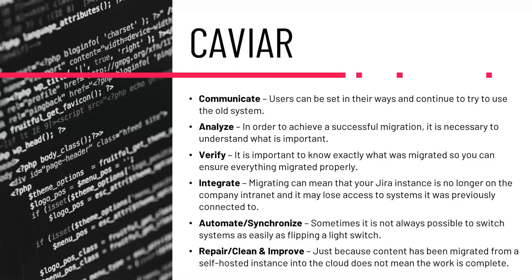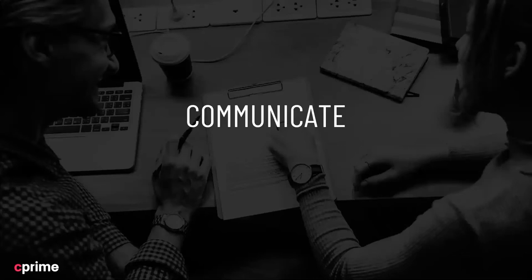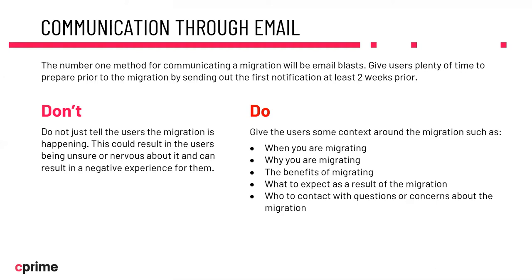Let's talk about the first step, which is Communication. Obviously, the number one method for communicating that a migration is about to occur is going to be through a mass email or an email blast. While sending those email blasts, be sure not to just tell users that the migration is going to happen, but explain to them why they're migrating, when they're migrating, what they can expect as a result, and who to contact with questions. That's just good common practice.